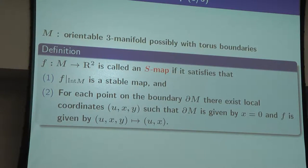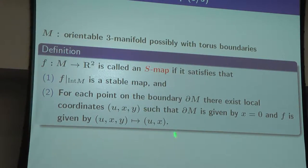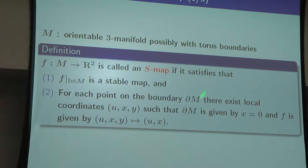I consider three-manifolds with torus boundary. A map is called an S-map if it satisfies: first, the map is a stable map in the interior of the manifold; and second, on the boundary, the map is a projection, and the boundary is given by x equals zero — somehow vertical to the projection. This is a specific condition on the boundary.